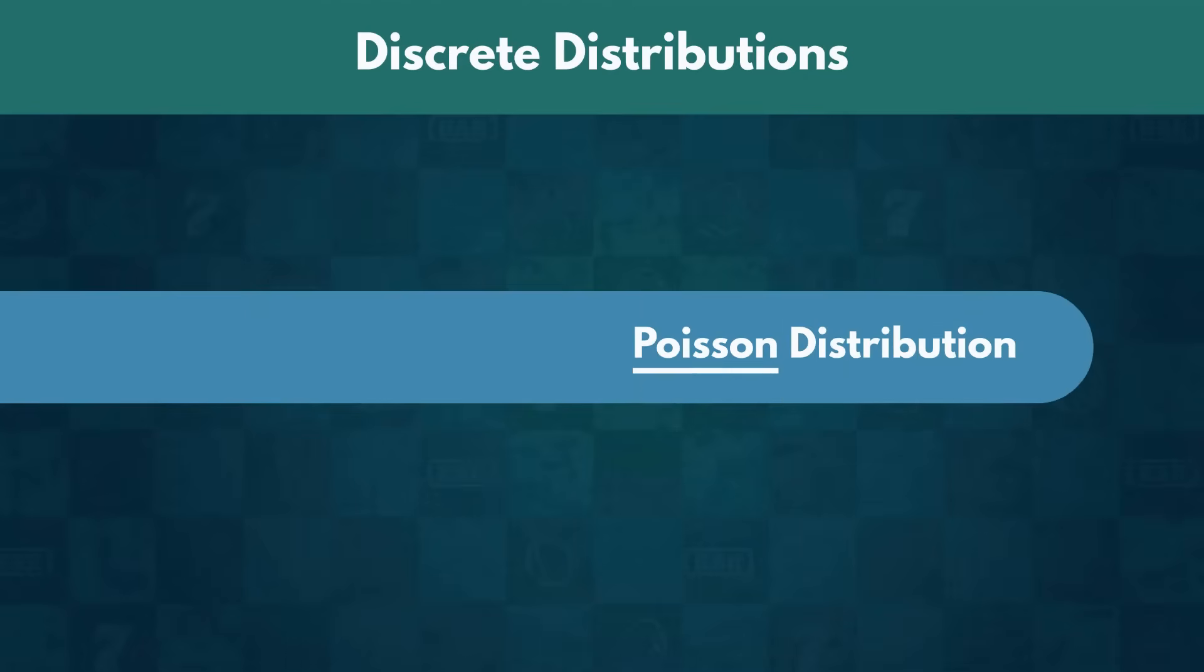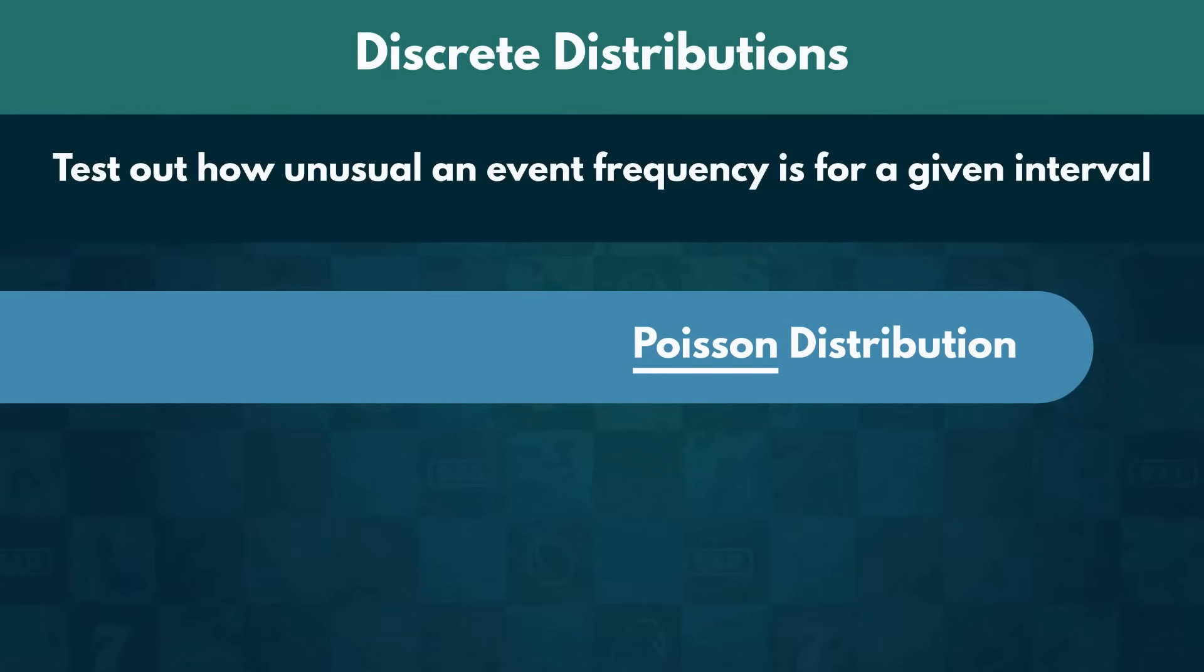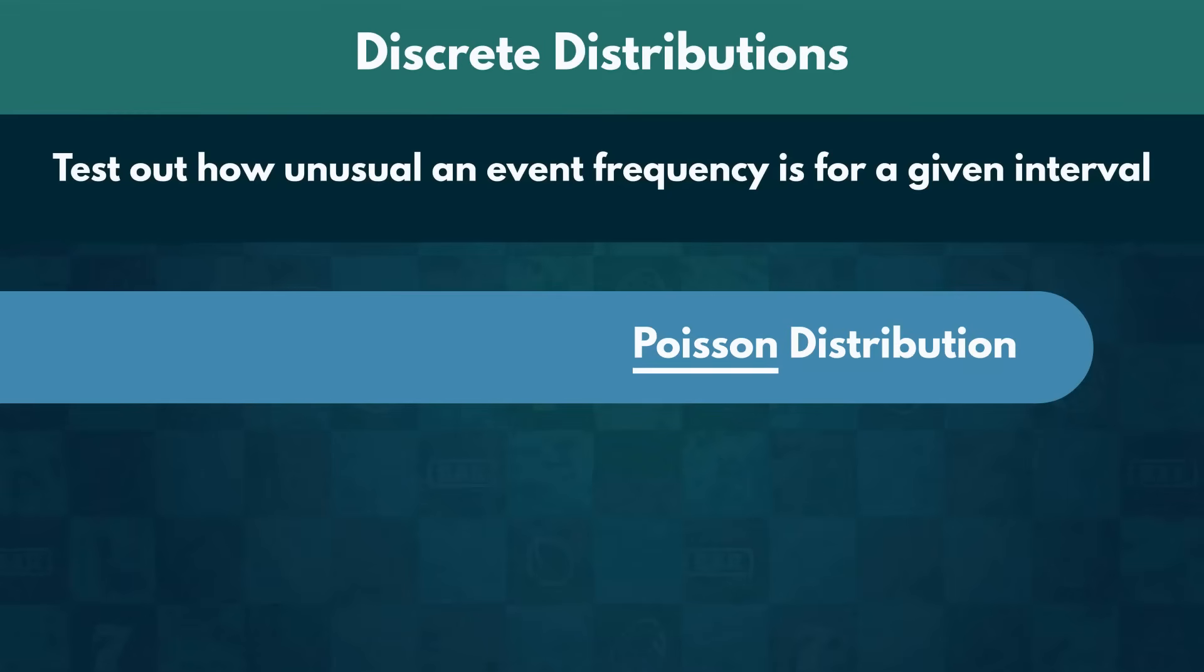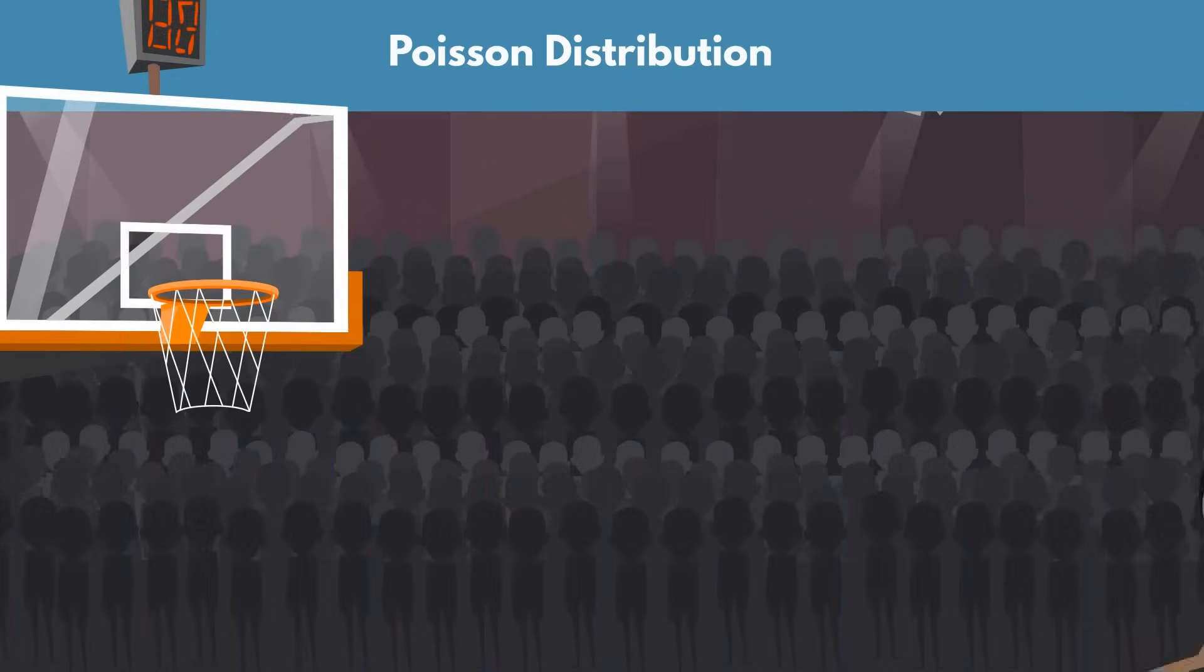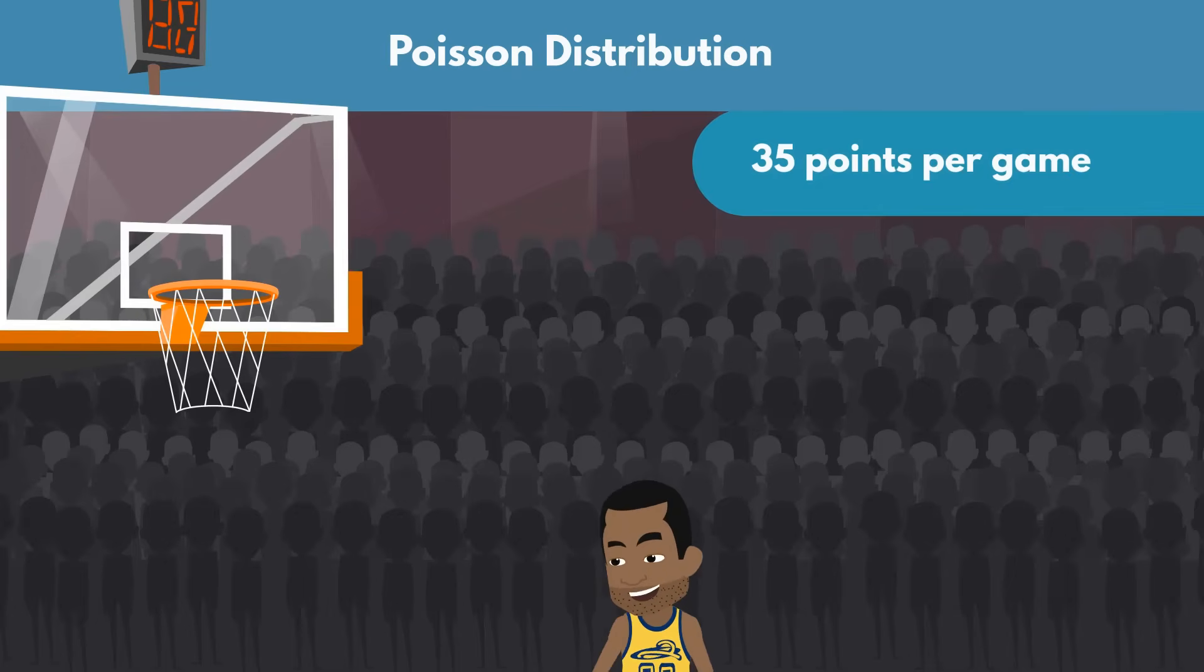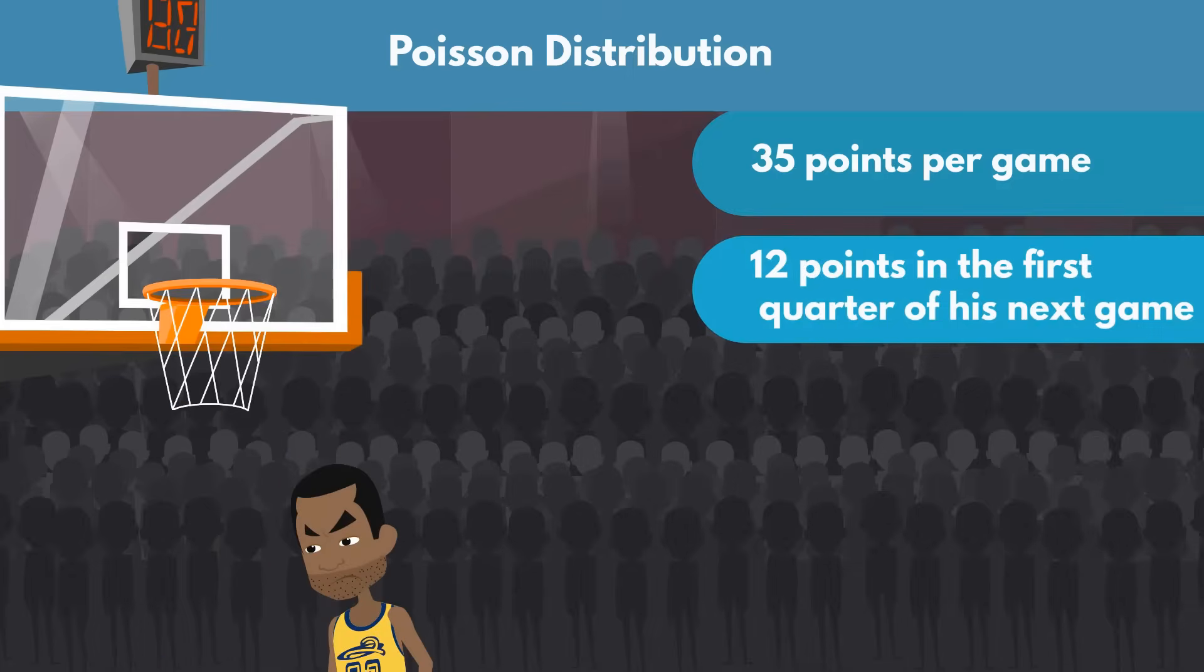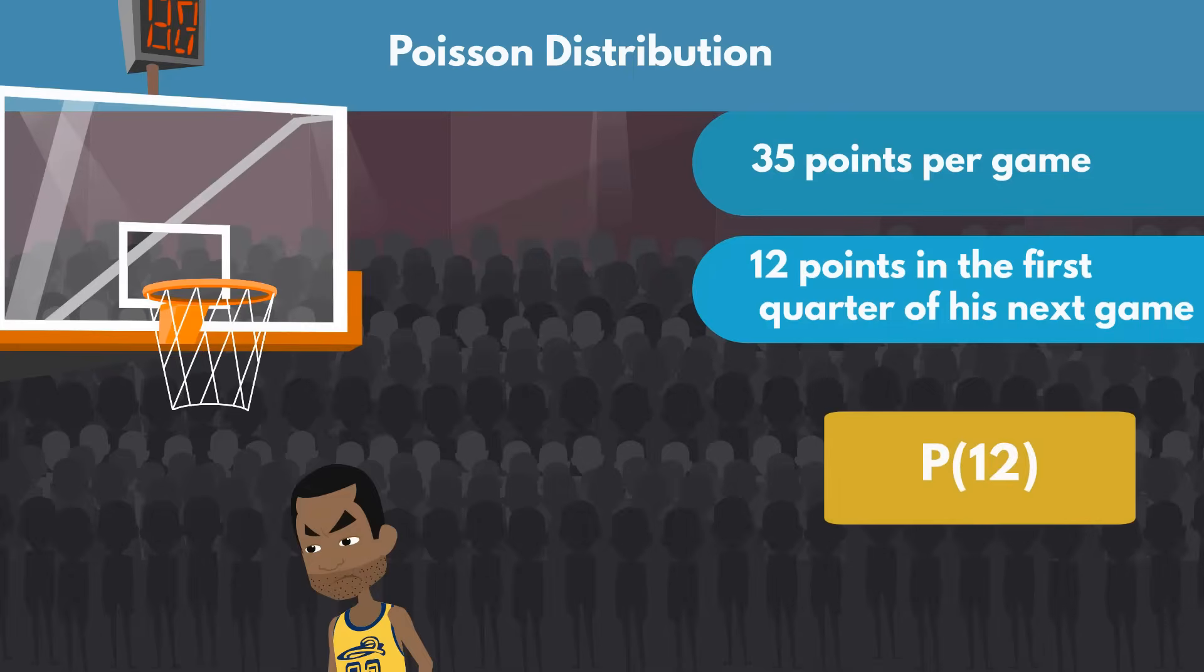Lastly, we should mention the Poisson distribution. We use it when we want to test out how unusual an event frequency is for a given interval. For example, imagine we know that so far LeBron James has averaged 35 points per game during the regular season. We want to know how likely it is that he will score 12 points in the first quarter of his next game. Since the frequency changes, so should our expectations for the outcome. Using the Poisson distribution, we are able to determine the chance of LeBron scoring exactly 12 points for the specified time interval.